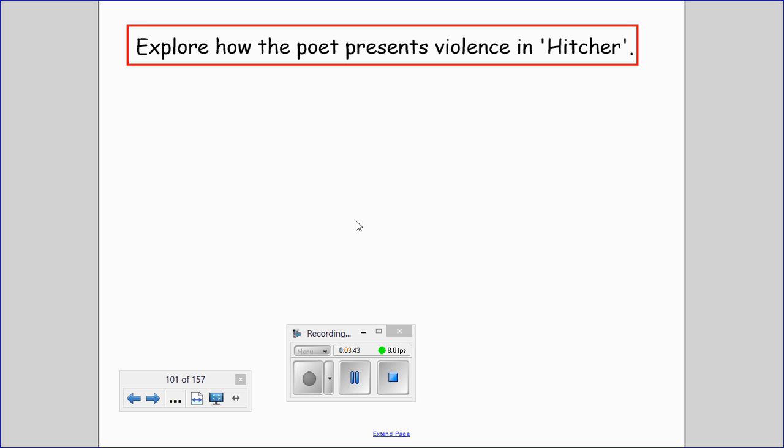And if you wanted to think about an exam question, you could explore how the poet presents violence in Hitcher. You could think about the enjambment, the structure that has been chosen, the contrast between characters, and particularly think about tone.